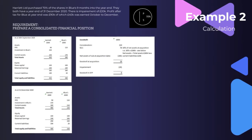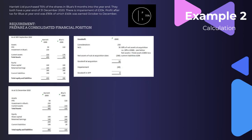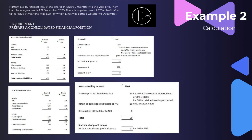Next, we work out the non-controlling interest using the year-end figures, where retained earnings is now 200k. For NCI in the statement of financial position: 30% of share capital (100k) = 30k; 30% of retained earnings at year end (200k) = 60k; no revaluation, so total NCI on the statement of financial position is 90k. For the statement of profit and loss: 30% of total profit after tax of 90k = 27k attributable to non-controlling interest.